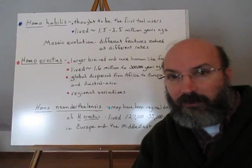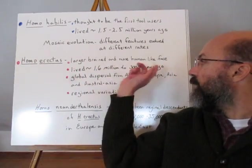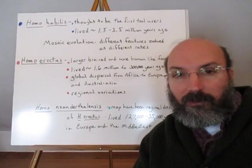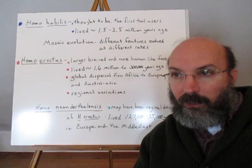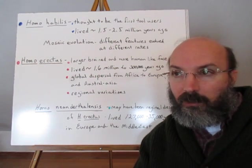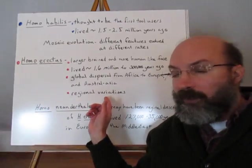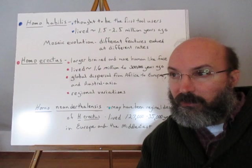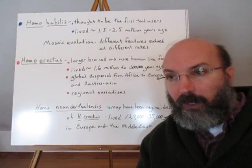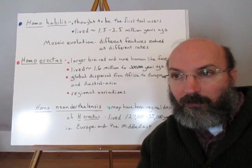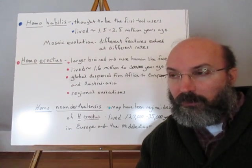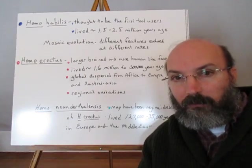Homo erectus is thought to be the ancestor of modern humans. They had larger brains and more human-like faces, lived approximately 1.6 million to 300,000 years ago, and dispersed out of Africa. This is the first group that actually left Africa and spread out across Europe, Asia, and Australasia, with many regional variations among these groups. They wore skins, made clothing, moved into colder climates, lived in caves, and hunted larger animals. One idea is that they moved out of Africa in pursuit of larger game, since predatory creatures require more territory than vegetarian ones.